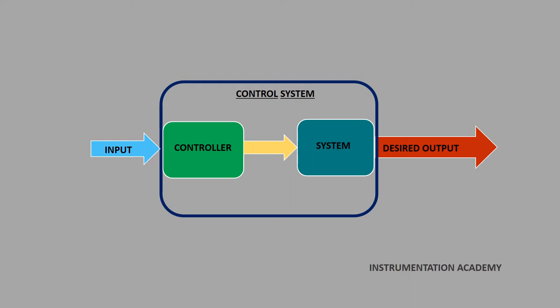This is the simple block diagram of a control system. In this we can see two blocks. One is a controller block and the other is the system block. In control system, the input is given to a controller and the controller generates a control signal which is then forwarded to the system block. The system block receives the control signal and processes it properly and finally gives the desired output.